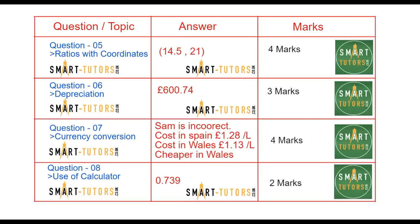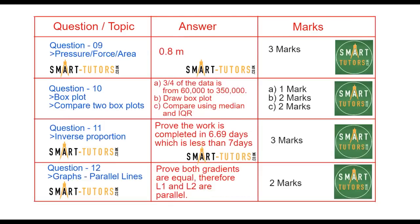Question number six is depreciation. Question number seven is currency conversion. Question number eight is use of a calculator. Question number nine involves pressure, force, and area. They've asked for an area. One of the sides is given and the other side is the question.